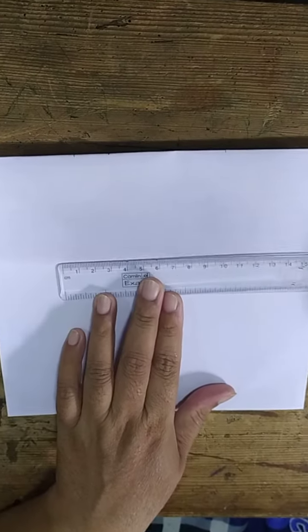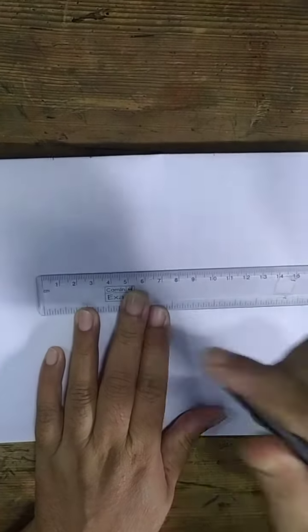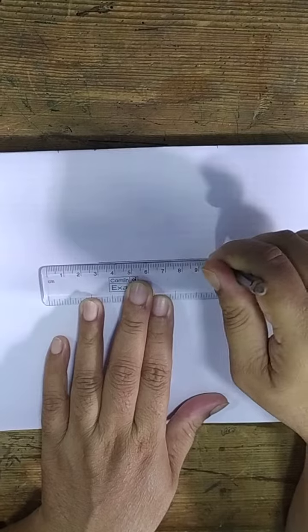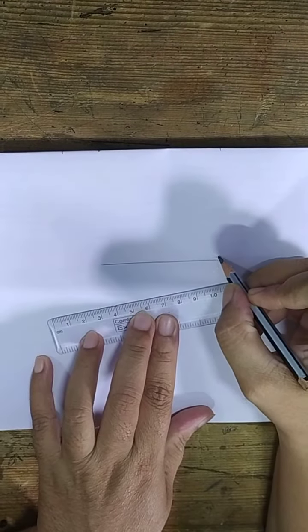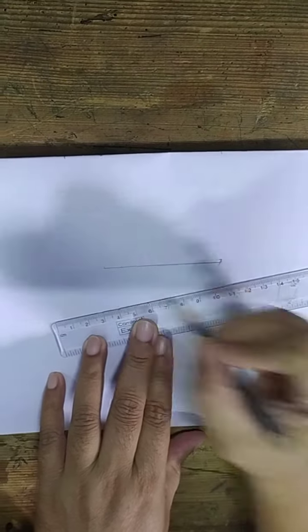Let us draw the angle of 75 degrees. For drawing the angle of 75 degrees, first we have to draw the angle of 90. This is the one arm and this will be your vertex.